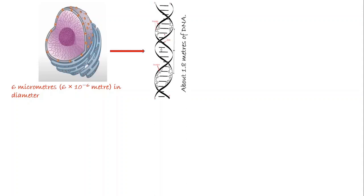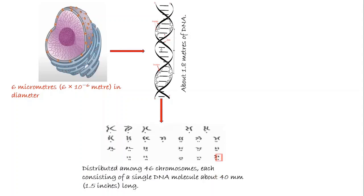The nucleus of the average human cell is only 6 micrometers in diameter, yet it contains about 1.8 meters of DNA. This is distributed among 46 chromosomes, each consisting of a single DNA molecule about 40 mm or 1.5 inches long.